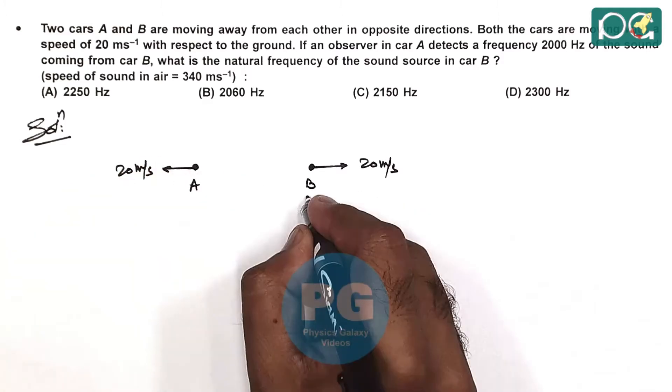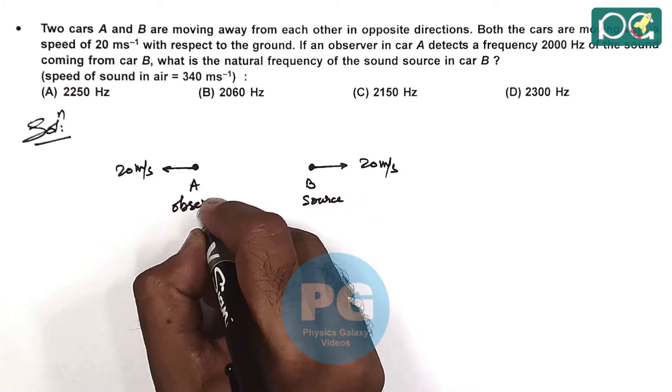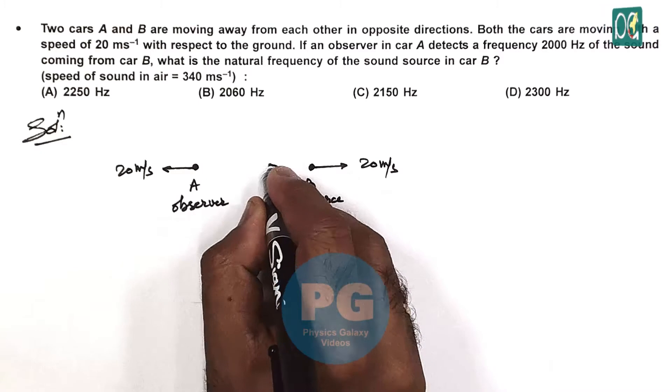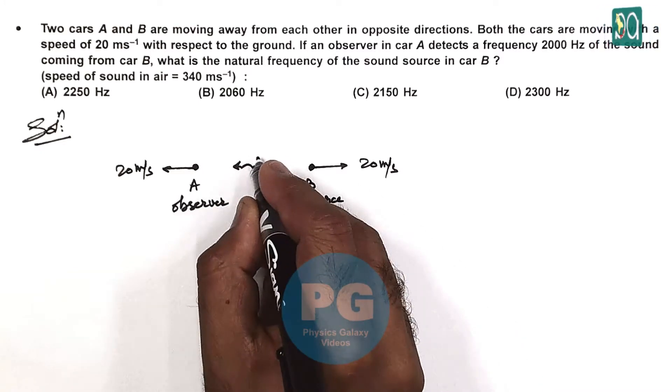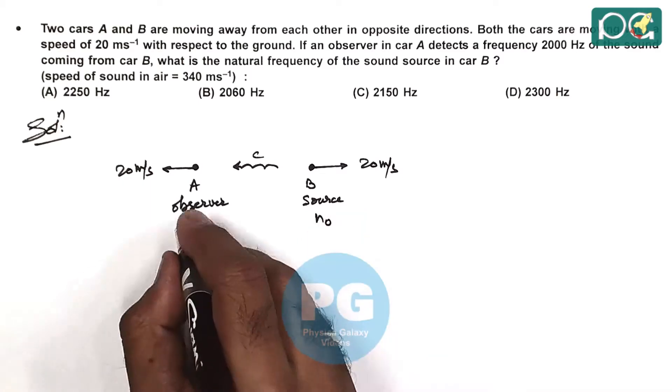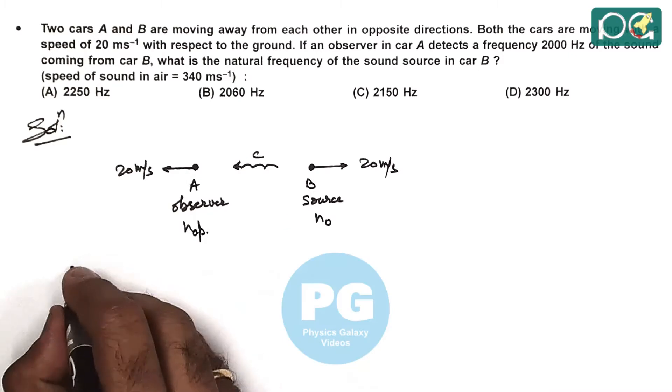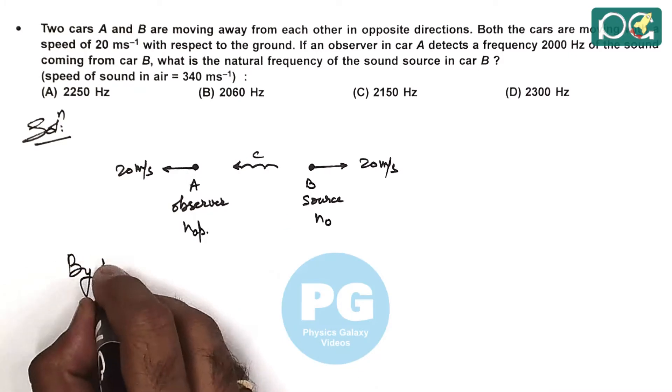B is the actual source and A is the observer. Sound travels from B to A at speed C. If N0 is the frequency of the source and N_apparent is the frequency observed by A, we can write this by Doppler's effect.